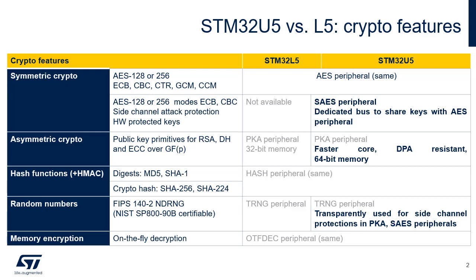SAES has the possibility to load secret keys — a boot hardware key, or BHK, and a derived hardware unique key, or DHUK — by hardware, usable but not readable by the application. This transfer is done through a dedicated bus connecting the flash option bytes, in which the key resides, and tamper-resistant secure backup registers. SAES also has the possibility to share keys with the regular AES module.